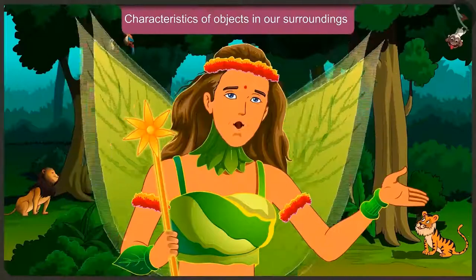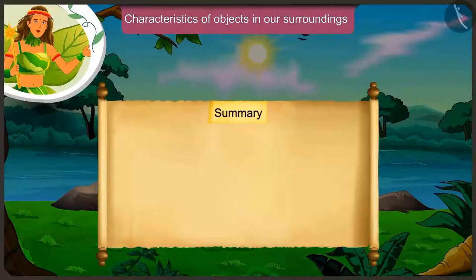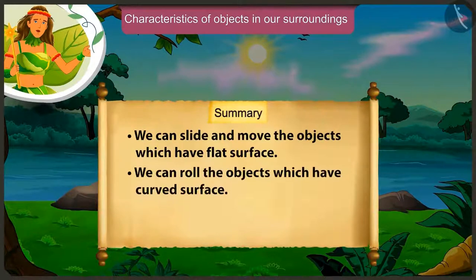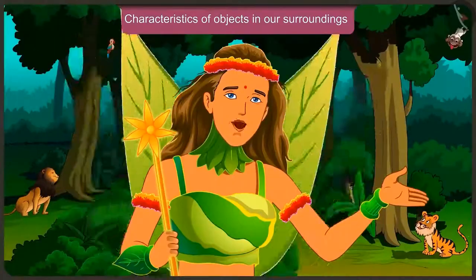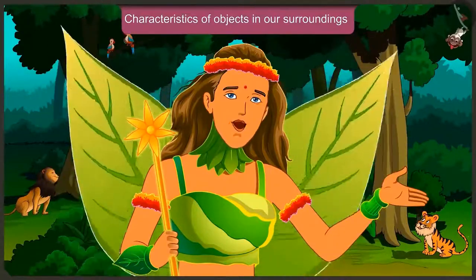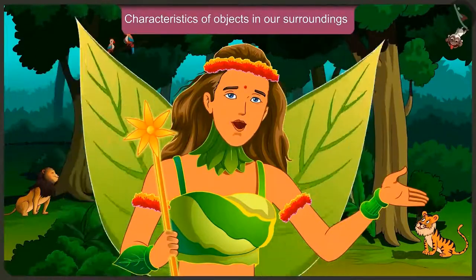Friends, today we understood some interesting facts about the characteristics of objects around us. We can slide objects with a flat surface, roll objects with a round surface, and both roll and slide objects with a cylindrical surface. In the next video, we will learn some more characteristics of objects around us.